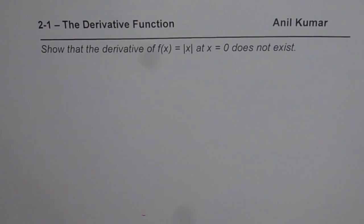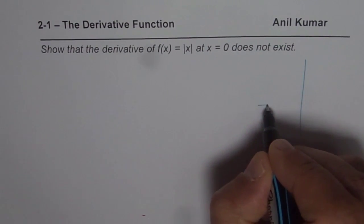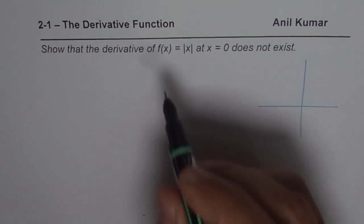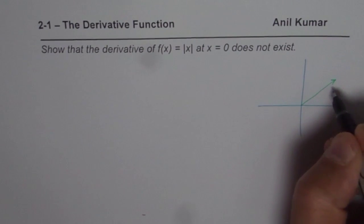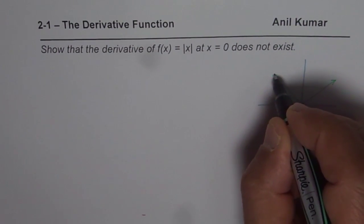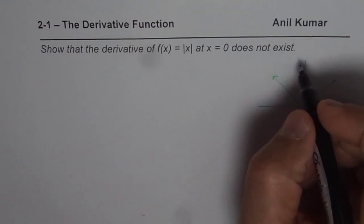Now to show this, let us first look into the function itself. When we say derivative, we are looking for rate of change at that point, or slope at that given point. Absolute x is a function which equals x when x is greater than or equal to 0, and minus x when x is less than 0. That is the absolute value of x, and that is the function f of x we are talking about.